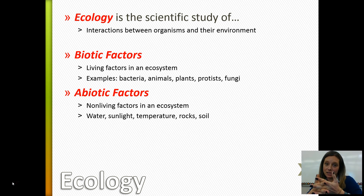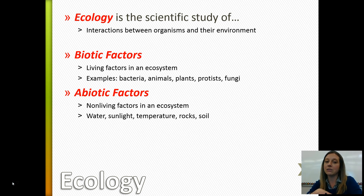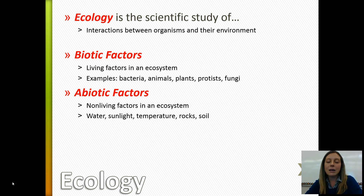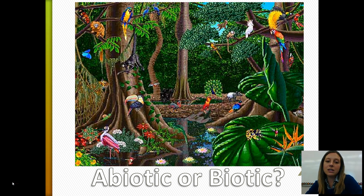Hopefully by now, second semester of biology, you know that the word part 'bio' means life. So biotic factors are the living factors in an ecosystem. The abiotic factors are the non-living factors. When I say biotic factors and living factors, don't just think plants and animals — you also have fungi, bacteria, and other organisms. Abiotic factors are going to be everything from water to sunlight to temperature to rocks to soil. Here is a tropical rainforest ecosystem — see if you can identify maybe three abiotic factors and three biotic factors just within this picture alone.